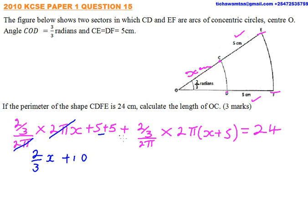That is 5 plus 5. The other side, we have 2π divided by 2π, we get 1. We multiply this 2 by X, so we get it is 2/3X.